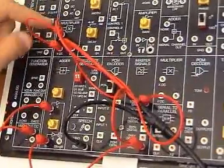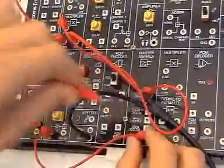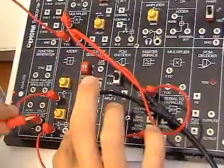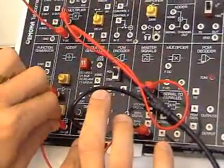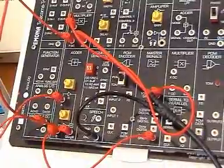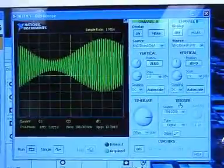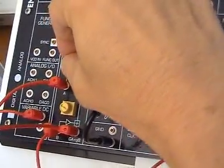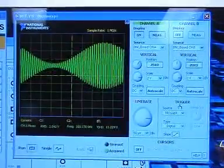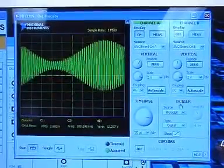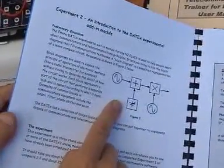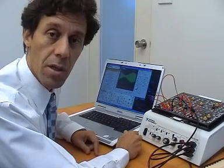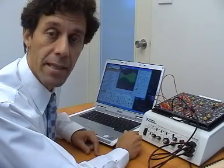If we now replace the input to the multiplier connected to the 2kHz sinusoid with the output from the adder we previously patched together and view the output from the multiplier, while we vary the adder gains you will see a familiar signal known to you as amplitude modulation, which is expressed as this simple equation. In this simple example we have seen how the math of telecommunication can be modeled using several Datex blocks.